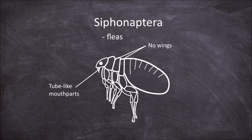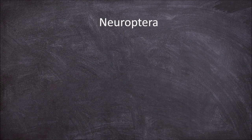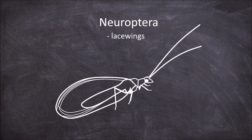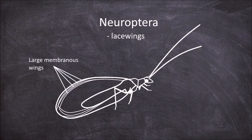The next order is the Neuroptera, which are the lacewings. They are soft-bodied insects that have four large membranous wings that give these insects their lace-like appearance.